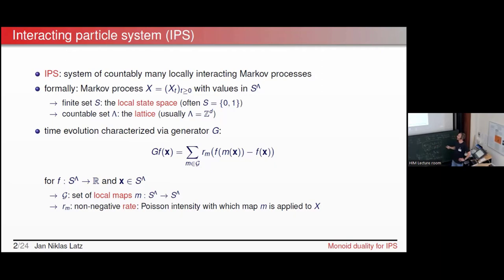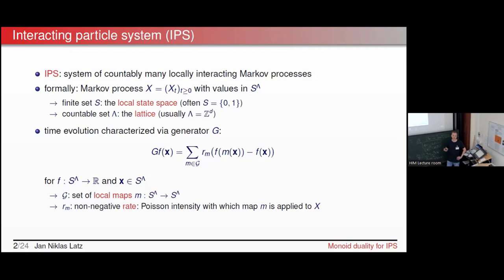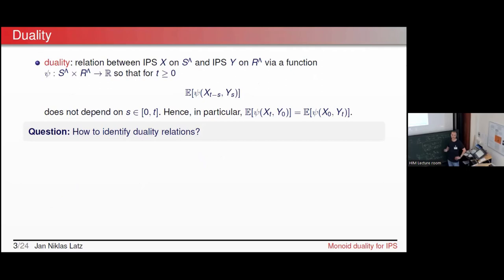The time evolution of such an interacting particle system is given in the following version, often called the random mapping representation of the generator, where we have some non-negative rates r_m with which local maps m are applied to the current configuration of our process. Here, local maps are continuous maps from the global state space S^Λ to itself that can change at most a finite number of states.